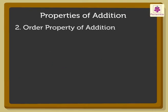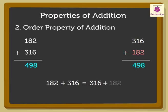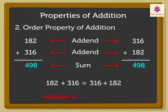Order property of addition. Let us take the numbers 182 and 316. When we add 182 and 316, we get the sum 498. Now, let us change the order of addends. Let us add 316 and 182. Again, we get the sum 498. Hence, 182 plus 316 is equal to 316 plus 182. Thus, we know that changing the order of the addends does not change the sum. We can say that addition is commutative.